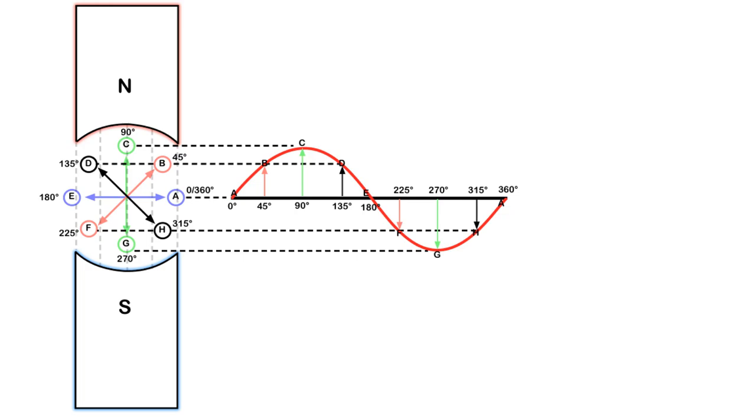So let's start out here. If we start at A with my conductor, my conductor is running parallel to the lines of flux, which means that there are no flux lines being cut by the conductor because it's running right along with it, which if you look over here means that we're at zero degrees and we have no voltage being generated.